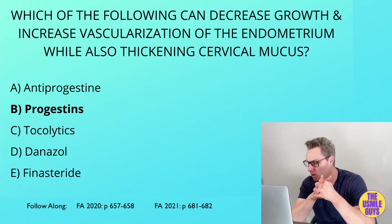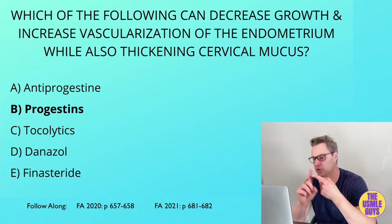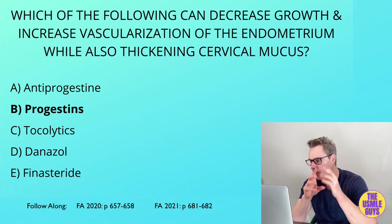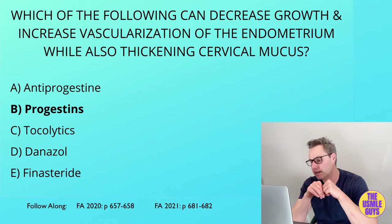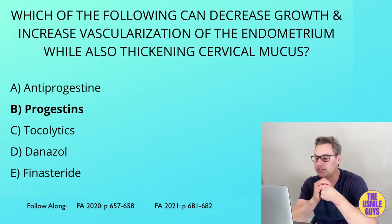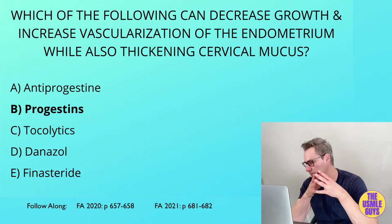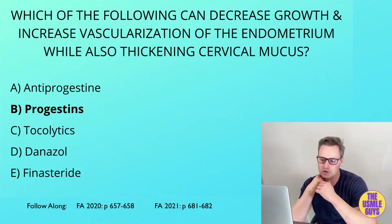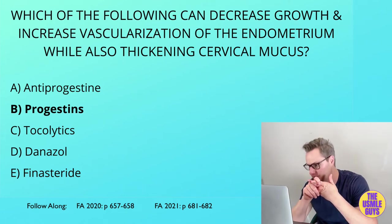Let's talk about combined contraception and copper IUDs. Combined contraceptive pills, patches, and vaginal rings combine progestins and ethinyl estradiol. These inhibit both FSH and LH to prevent a surge of estrogen, which inhibits the LH surge needed mid-cycle to induce ovulation. The progestins also thicken cervical mucus and inhibit endometrial proliferation.